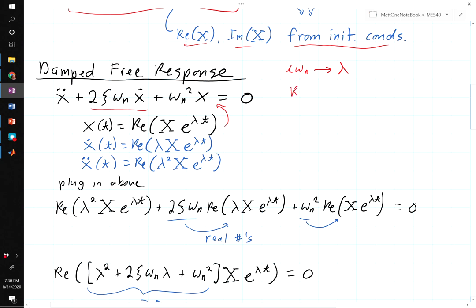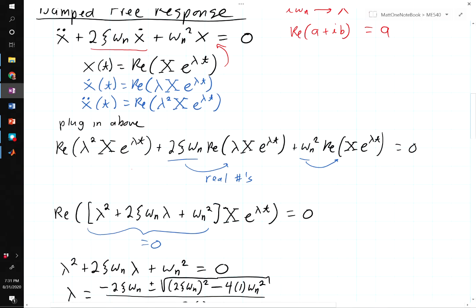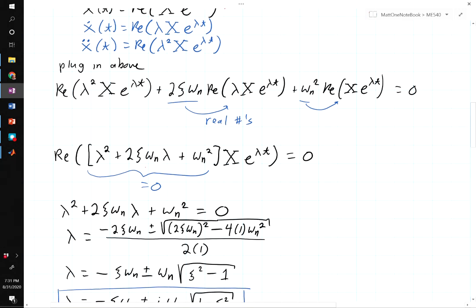By the way, the real part, if we have a complex number a plus ib, just takes the part that doesn't have an i in it. So we can ignore that when we take a derivative. If we plug all of those in we get this expression, and because these are real numbers we can move them inside the real part without changing anything. That lets us combine everything, factor out the e to the λt from each of these, factor out the x, and we end up with this polynomial in λ times x times e to the λt equals zero.